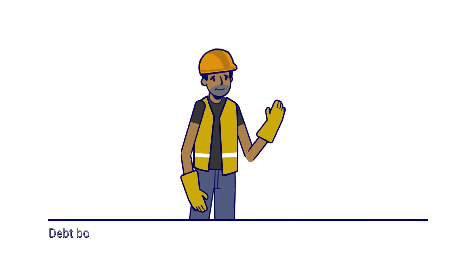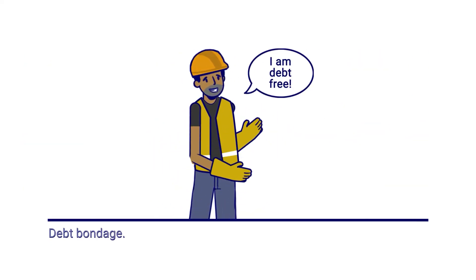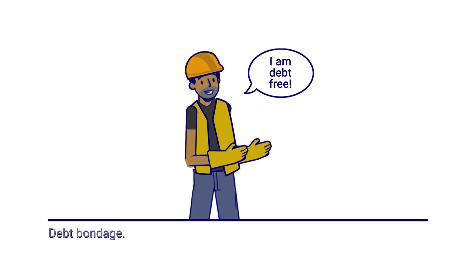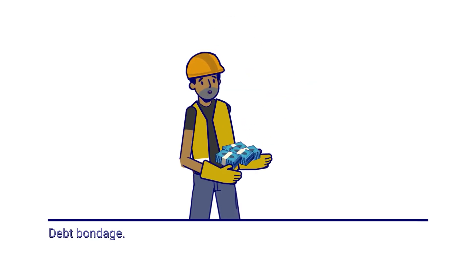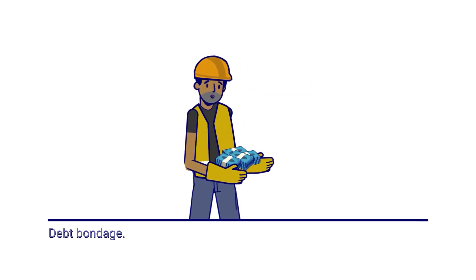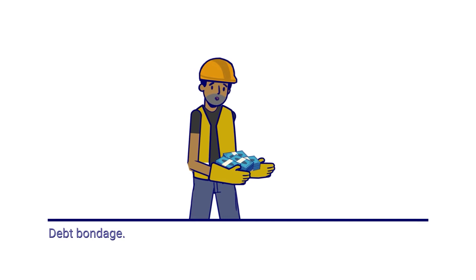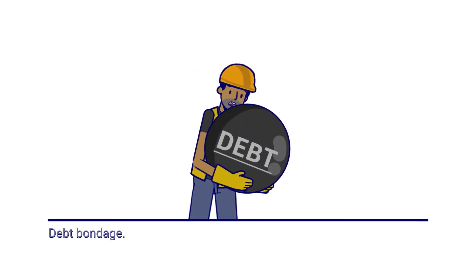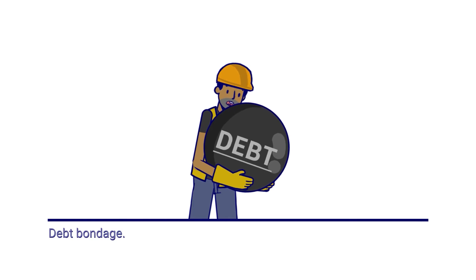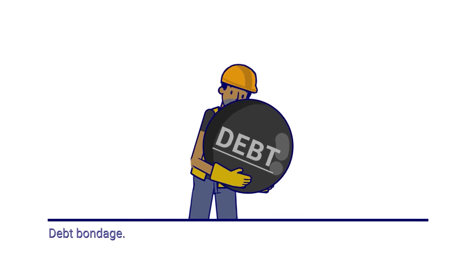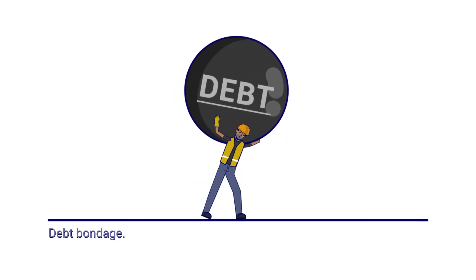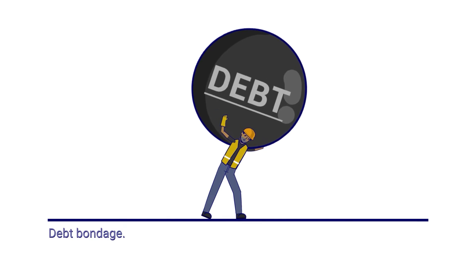Often, migrant workers work to pay off debts incurred before arriving in Malaysia, and workers may receive wage advances or loans from the employer. To avoid being accused of debt bondage, such wage advances or loans should not be artificially inflated, including by imposing exorbitant interest rates.